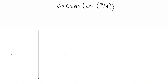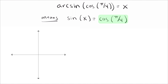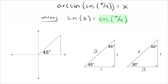Problem 4 is arcsin(cos(π/4)). There's now more stuff inside the arc function, but it's straightforward. We set the expression equal to x and write: sine of x equals cosine of π/4. We then evaluate the right side. π/4 is 45 degrees, which is in the first quadrant and gives the 45-45-90 triangle with sides 1, 1, √2.